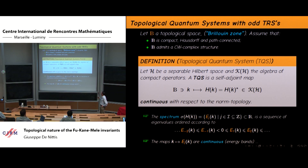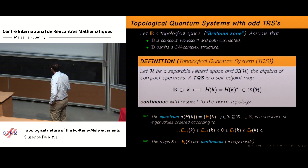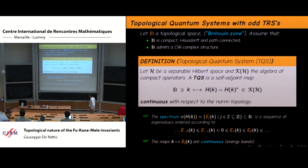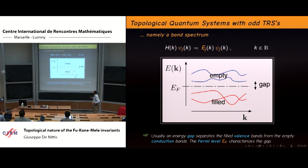This condition about compactness can be relaxed — we can ask that the operator just has a compact resolvent for each K. But for the aims of this talk, compactness is enough. Compactness is important because it means that at each point K, the Hamiltonian H(K) has a spectrum which is a finite collection of eigenvalues. The continuity of this map also implies the continuity of the energy bands, which can be ordered according to the ordering on the real line.